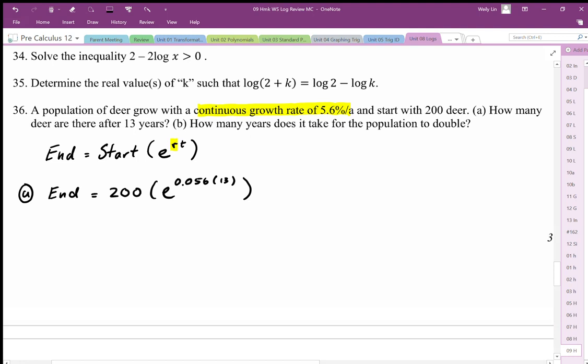Okay, so the 0.056 represents the continuous growth rate of 5.6%. Our end value after 13 years is going to be 236.58 or 236.59. We can round that to 237 deer. If you want to just truncate that because we haven't quite gotten to 237 deer, you can also say 236.